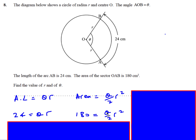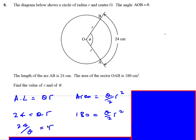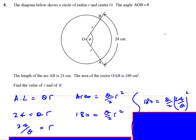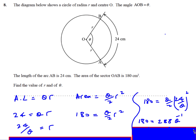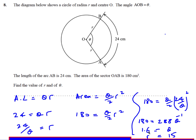From the arc length equation, rearranging gives r = 24/θ. Substituting into the area equation: 180 = θ/2 × (24/θ)². Simplifying: 24² on top, θ² on the bottom, with θ on top and 2 on the bottom — this gives 180 = 288 × θ⁻¹. Solving: θ = 1.6.